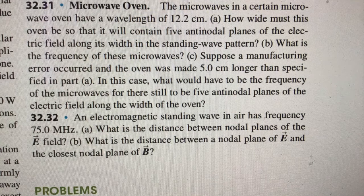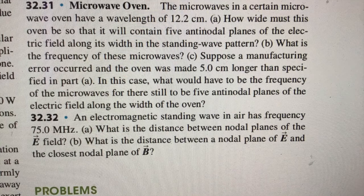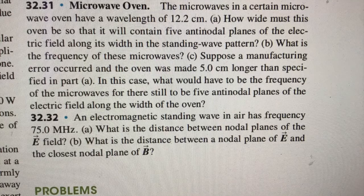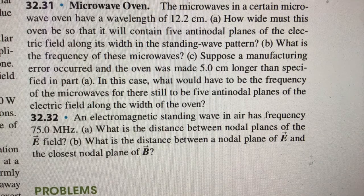What is the frequency of these microwaves? And if a manufacturing error occurred and the oven was made five centimeters longer than specified in part A, what would have to be the frequency of the microwaves for there still to be five antinodal planes? So this kind of is a test of your basic physics of waves, a little bit of electromagnetism. It's not too difficult, fairly straightforward, but a good problem to keep yourself in practice.